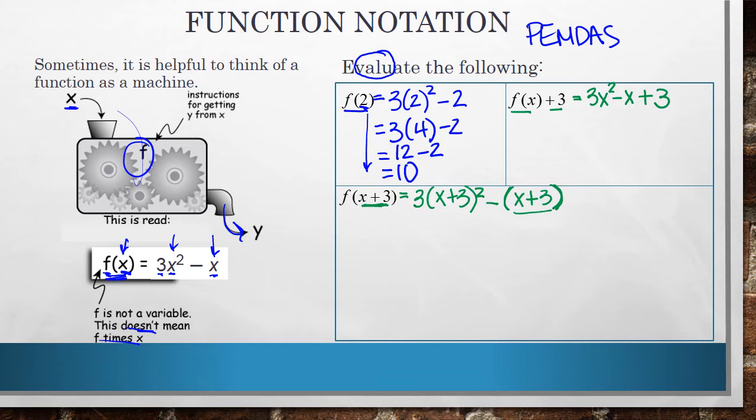Okay, now when I go to actually evaluate this, a lot of students want to take this 2 and distribute it to the x and the 3, which is not the case. x plus 3 quantity squared means x plus 3 times x plus 3. My best advice is write that out so you don't make that same mistake where a lot of students will just say, oh, that's x squared plus 3 squared, which is 9. That is not true. You cannot just distribute that squared through. This means x plus 3 times x plus 3.